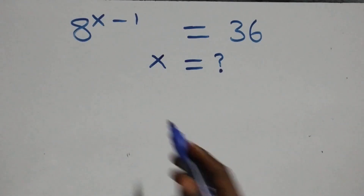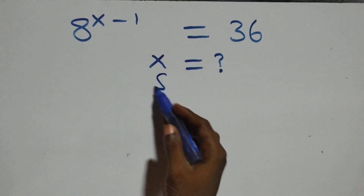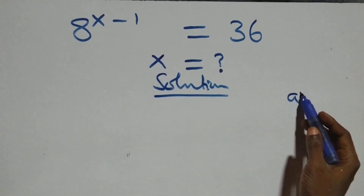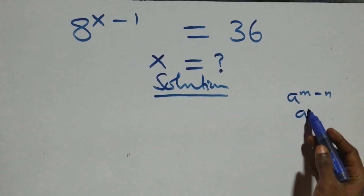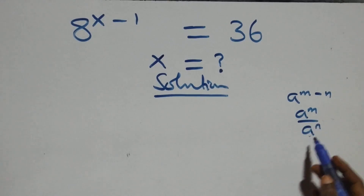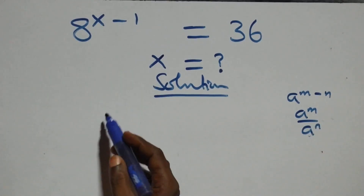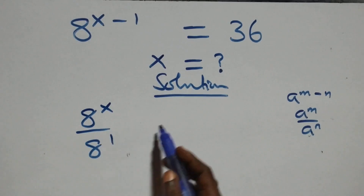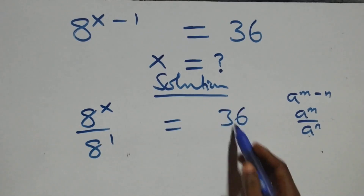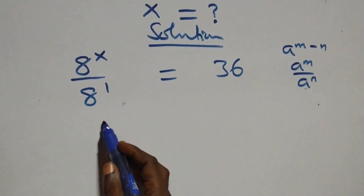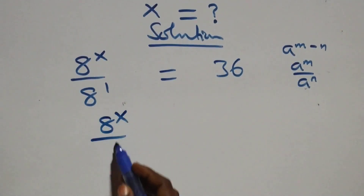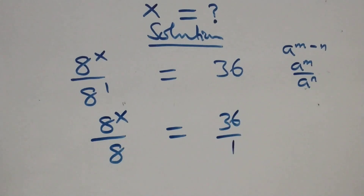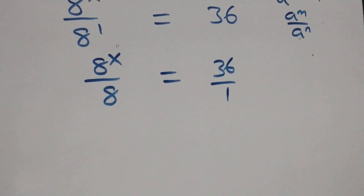Hello, welcome. We solve this exponential equation. From what we have here, this follows: a raised to power n minus n is the same as a raised to power n over a raised to power n. So this becomes 8 raised to power x over 8 raised to power 1, equals 36. We can write 8 raised to power x over 8, which equals 36 over 1.